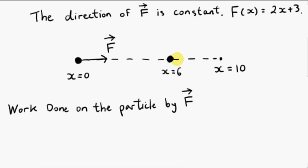Well, the direction is to the right, because we said that the direction is constant, it doesn't change. But what about the magnitude? We just have to plug 6 into this formula here. 2 times 6 is 12, plus 3 is 15. So the magnitude at x equals 6 is 15 newtons.